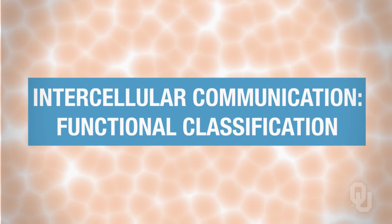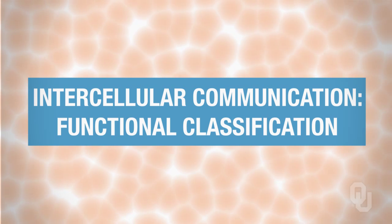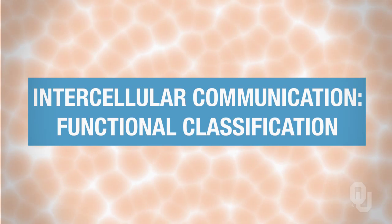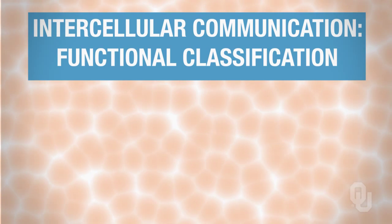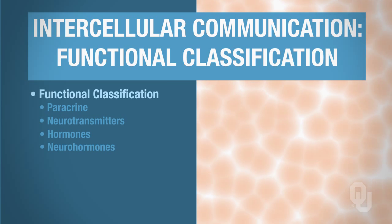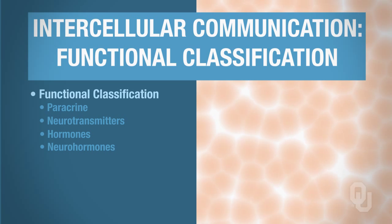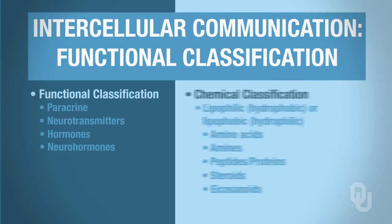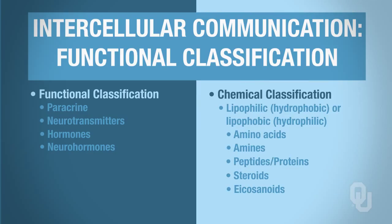We are now going to begin part two of the chemical messengers. We're going to be talking about the functional classification of chemical messengers, classifying them into two different categories based on their functional property — how they operate — and their chemical composition. This lecture is specifically going to focus only on the functional classification; once complete, we'll move into the chemical classification.